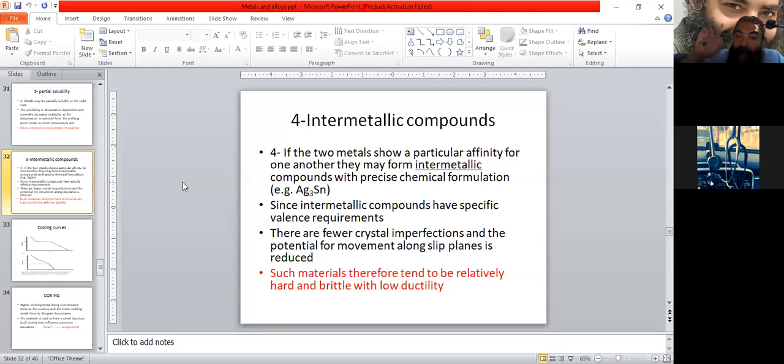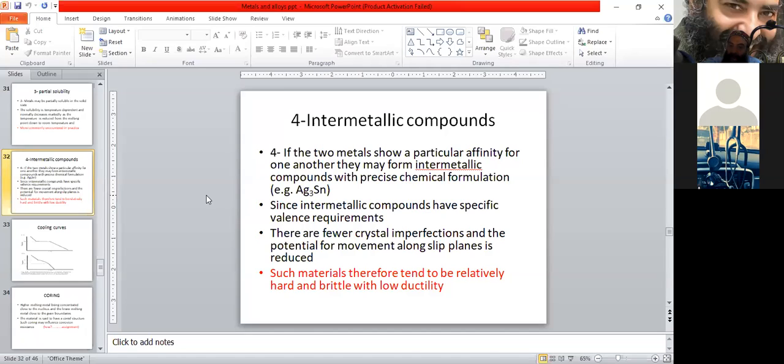Compounds we have studied first were interstitial compounds. Now we discuss intermetallic compounds. Interstitials are one thing, intermetallic compounds are another. If two metals show a particular affinity for one another, they may form intermetallic compounds.